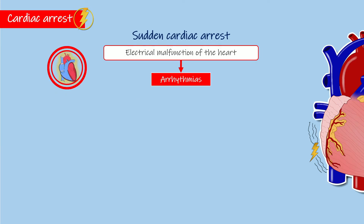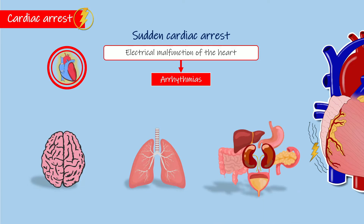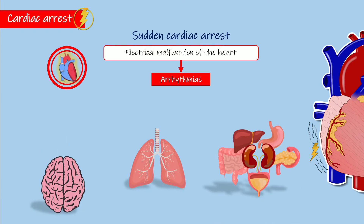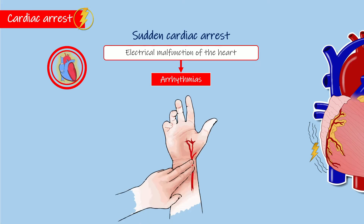An arrhythmia is a disturbance in the heart rhythm, either by increased or decreased heartbeats per minute. As the pumping of the heart is interrupted, blood does not arrive correctly to the brain, lungs, and other organs, making the person lose consciousness and making it impossible to find a peripheral pulse.